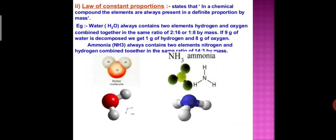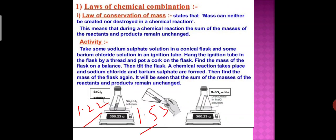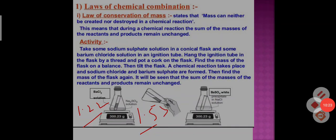Next is the Law of Constant Proportion. According to this law, in a chemical compound the elements are always present in a definite proportion by mass. We will discuss the Law of Constant Proportion in the next video. I hope you understand the Law of Conservation of Mass — mass can neither be created nor destroyed; it always remains constant. Okay students, bye.